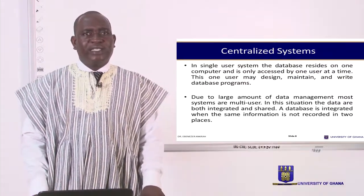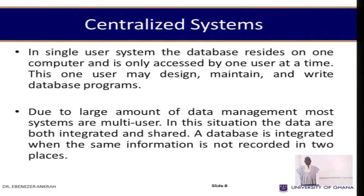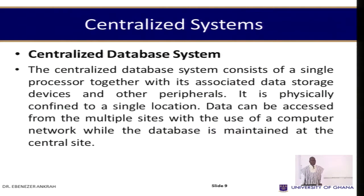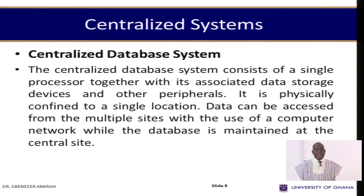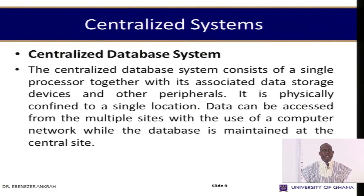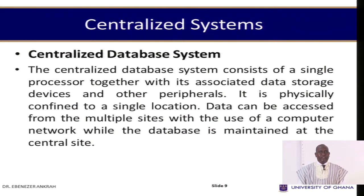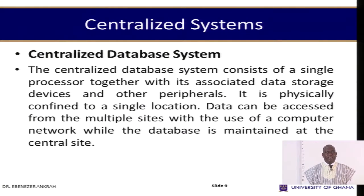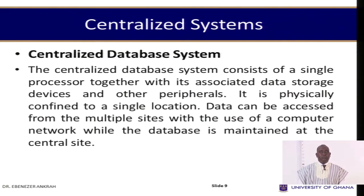In a multi-user situation, the data are both integrated and shared. A database is integrated when the same information is not recorded in two places. With a centralized system, the database consists of a single processor together with its associated data storage and other peripherals — all at the same location. It is geographically confined to a single location. Data can be accessed from multiple sites with the use of a computer network, while the database is maintained at the centralized site.